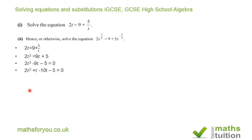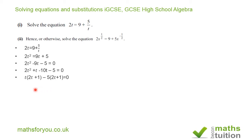For the first section I have t into 2t plus 1, and for the second section I have 5 into 2t plus 1. Now 2t plus 1 is common to both, so I can say that 2t plus 1 into t minus 5 is equal to 0.